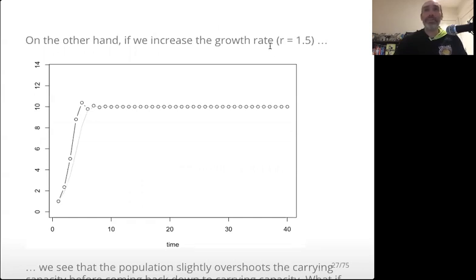So what would happen if we increased the population growth rate? Here, we increase the growth rate from 1 to 1.5. And we see that not only did the population grow faster, which is what we would have expected, but it actually overshot the carrying capacity of 10 by a little bit. And then it came back down and then wiggled a little bit, and then kind of converged to the carrying capacity.